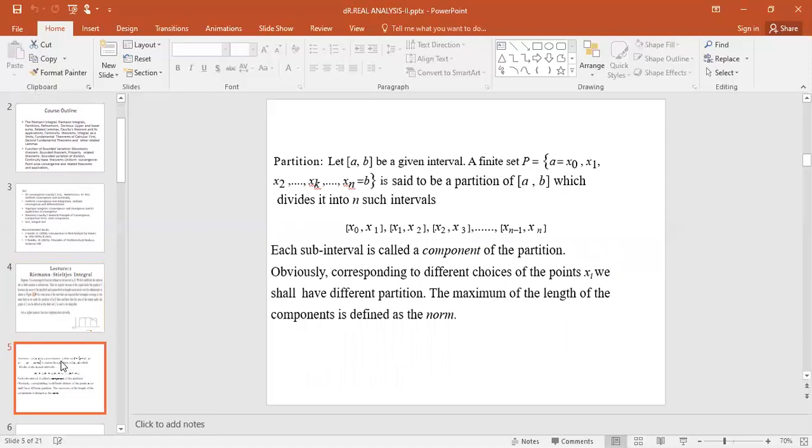Let [a, b] be an interval. Then the set P is equal to {x₀, x₁, x₂, x₃, ..., xₙ} is said to be a partitioning of the closed interval [a, b], which divides it into sub-intervals. Each sub-interval is called a component of the partition.